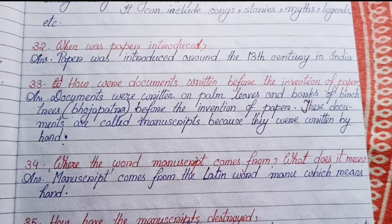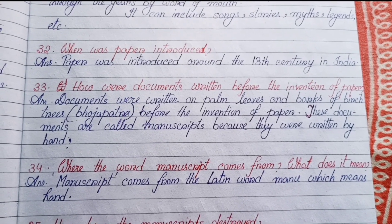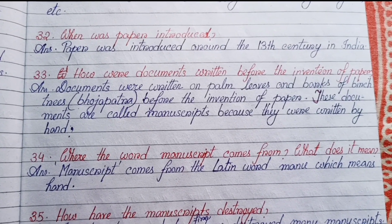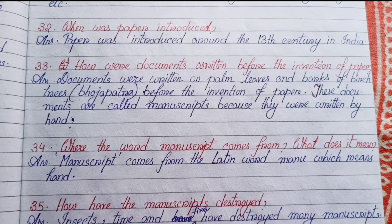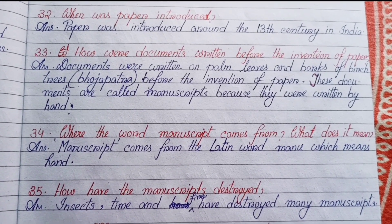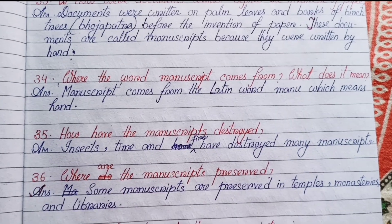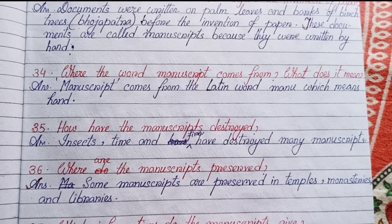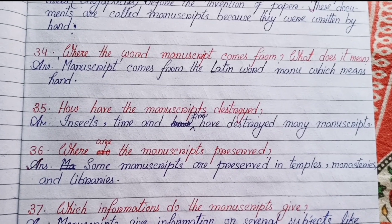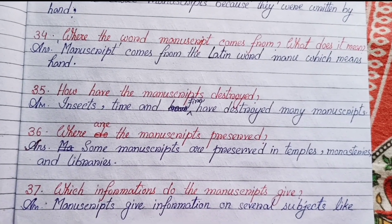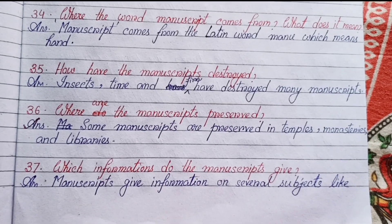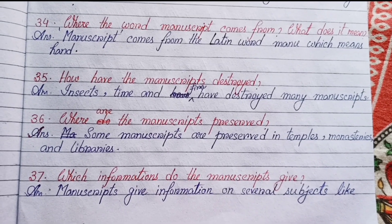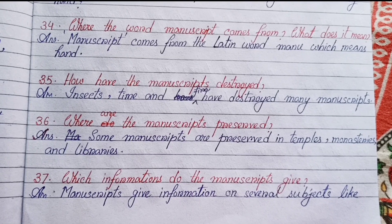Number thirty-two: When was paper introduced? Paper was introduced around the 13th century in India. Number thirty-three: How were documents written before the invention of paper? Documents were written on palm leaves and bark of birch trees (Bhoja patra) before the invention of paper. These documents are called manuscripts because they were written by hand. Number thirty-four: Where does the word manuscript come from? Manuscript comes from the Latin word 'manu,' which means hand. Number thirty-five: How have manuscripts been destroyed? Insects, time and fire have destroyed many manuscripts.